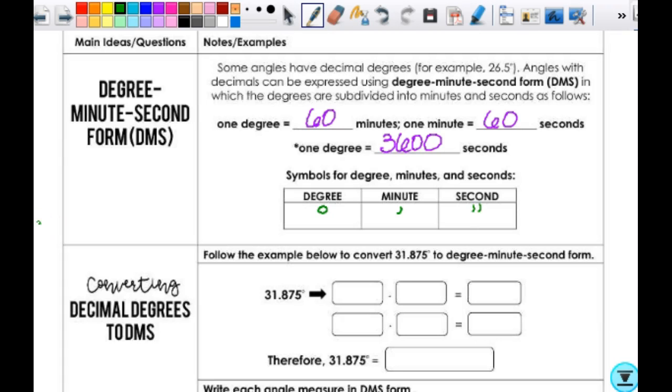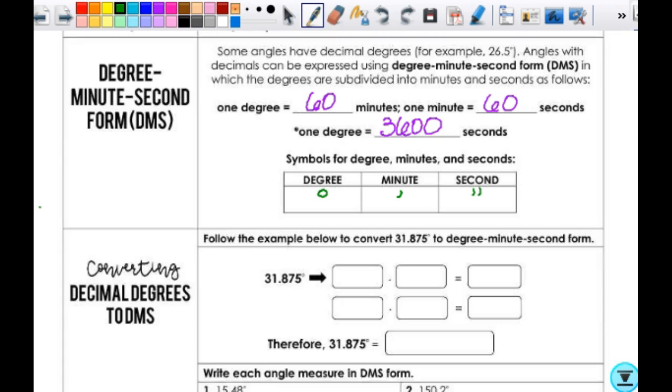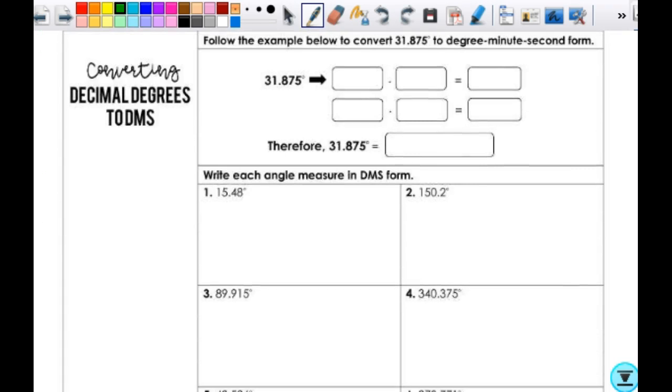Degrees is still the degree symbol. Minutes is an apostrophe. Seconds is a quote. What else uses the apostrophe and quotes for units? Feet and inches, right? This has nothing to do with feet and inches or time.